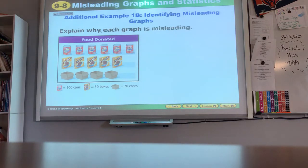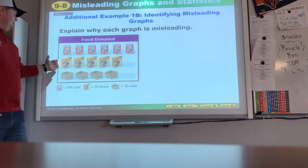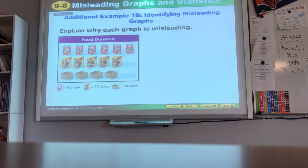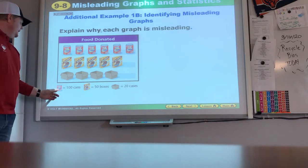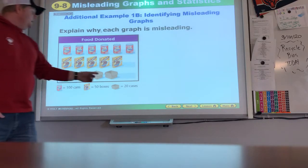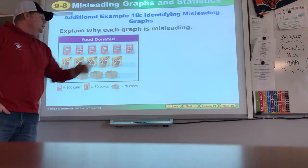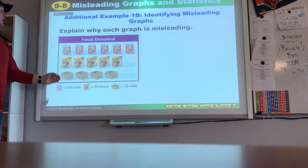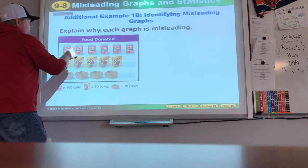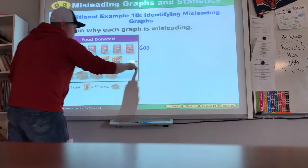Here, explain why each graph is misleading. Soup donated, puffs donated, cases donated. All right, we look at these. One can of soup equals 100 cans. One box equals 50 boxes. One case equals 20 cases. So while it looks like soup narrowly had more donations than puffs and puffs narrowly had more than cases,